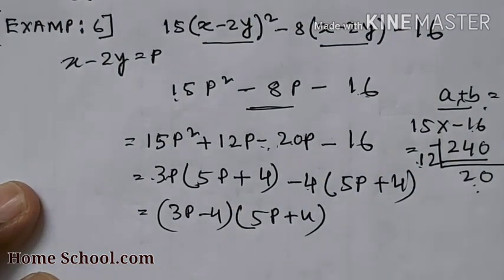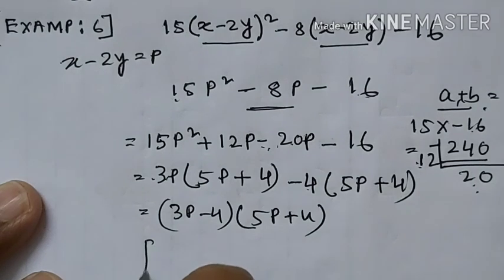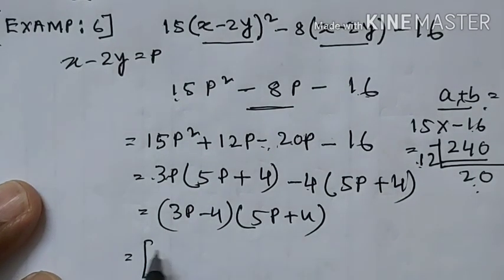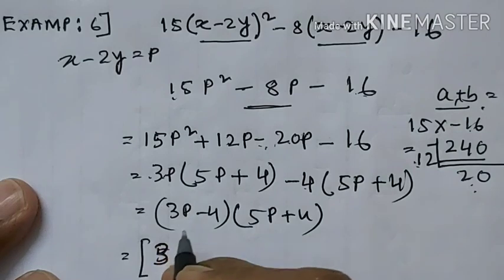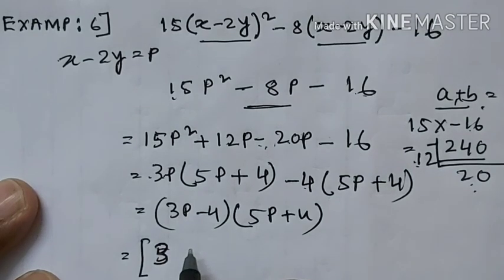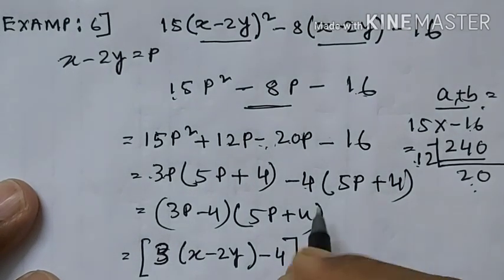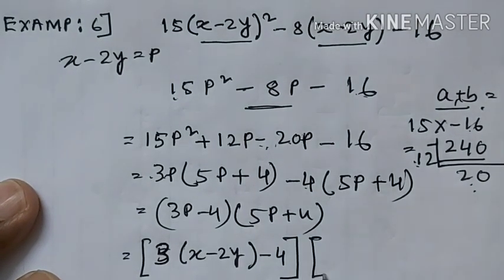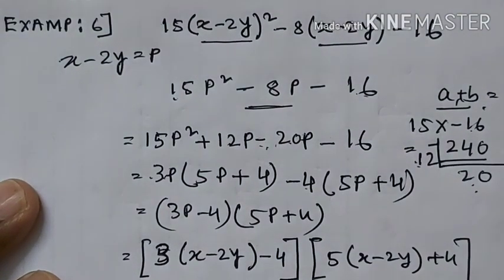Now substitute p back with (x − 2y). So the final answer becomes 3(x − 2y) − 4 and 5(x − 2y) + 4, which gives (3x − 6y − 4)(5x − 10y + 4).